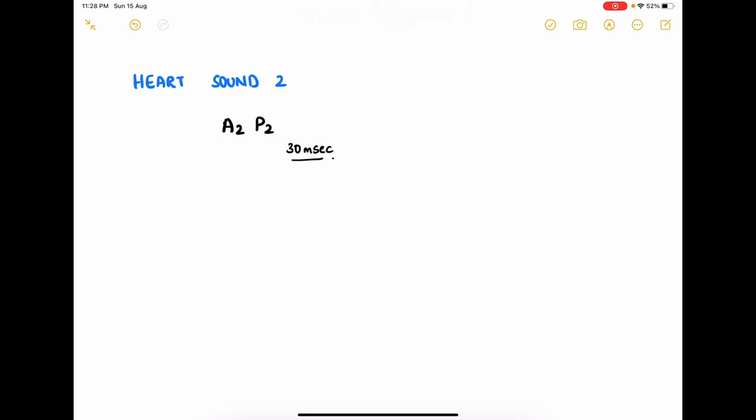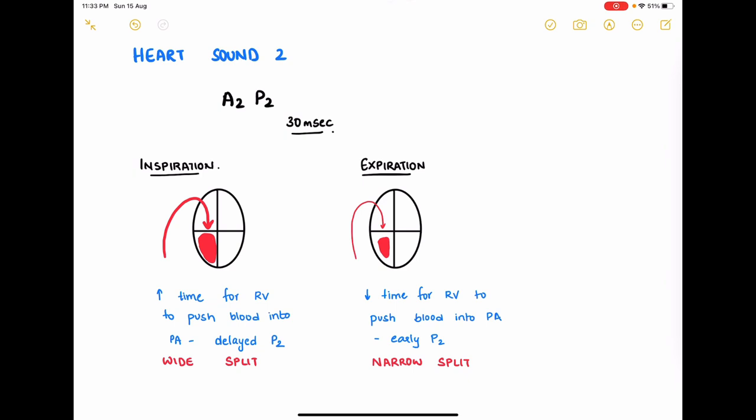Talking about the second heart sound it can again be divided into two components A2P2 because the aortic valve closes a little earlier than the pulmonic valve. The gap between this is generally 30 milliseconds but again this gap is variable. It changes with respiration.